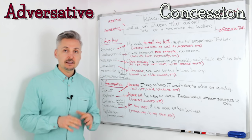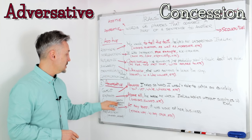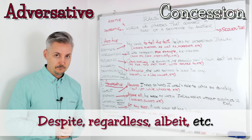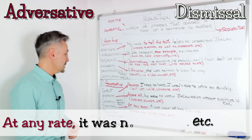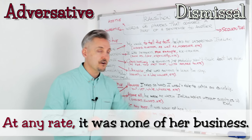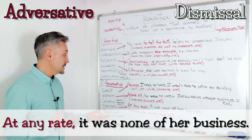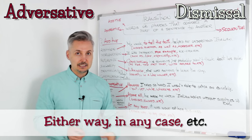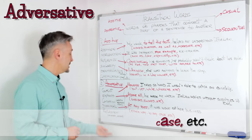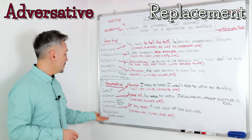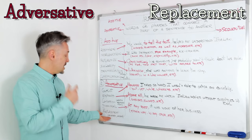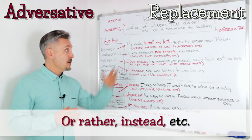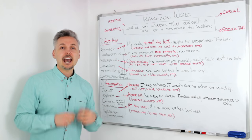For concession, I didn't give an example, but some transition words you can use are 'despite,' 'regardless,' and 'albeit.' For dismissal, the example is: 'At any rate, it was none of her business.' You can also use 'either way,' 'in any case,' etc. The last subgroup is replacement, and transition phrases include 'or rather' or the word 'instead.' There are many others, but I don't have room for them all.